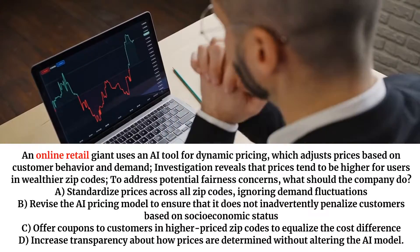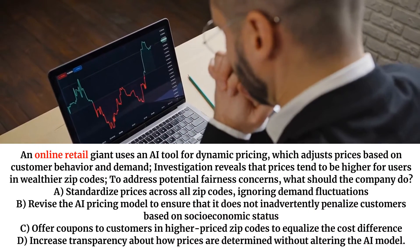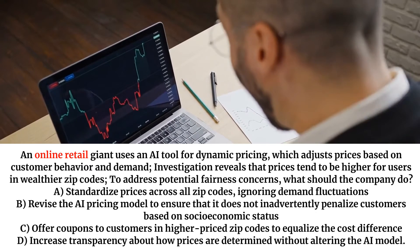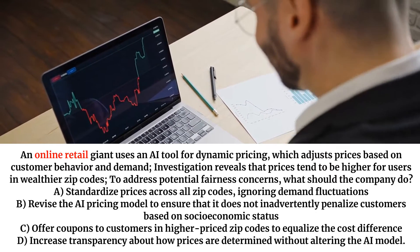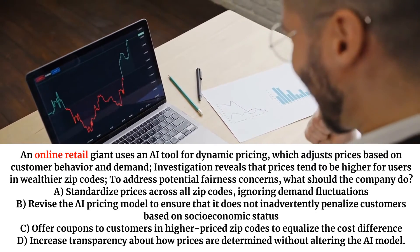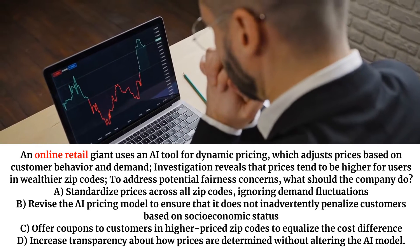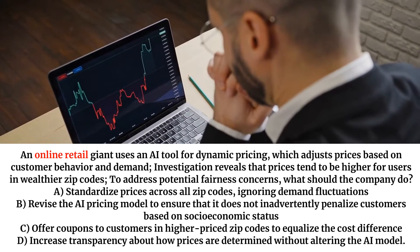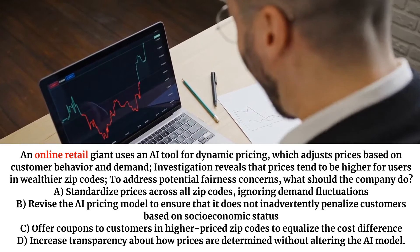An online retail giant uses an AI tool for dynamic pricing, which adjusts prices based on customer behavior and demand. Investigation reveals that prices tend to be higher for users in wealthier zip codes. To address potential fairness concerns, what should the company do?